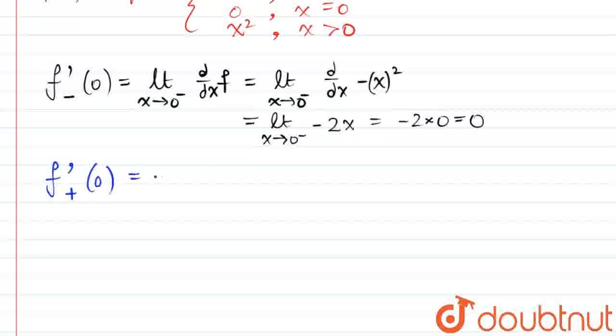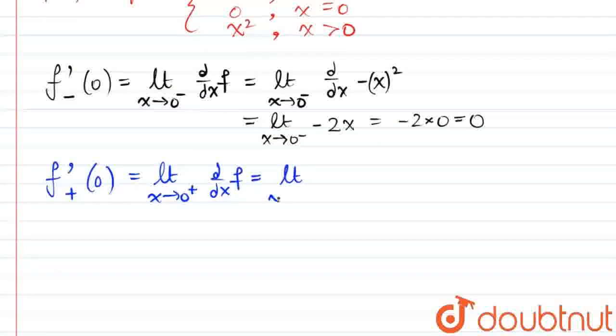The right-hand derivative of the function at 0 is the limit as x approaches 0 from the right of the derivative of just x squared. That will be equal to the limit as x approaches 0 from the right of 2 times x. Applying the limit, this will be 2 times 0 or 0.